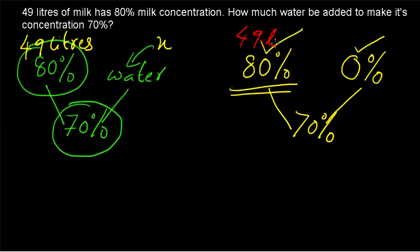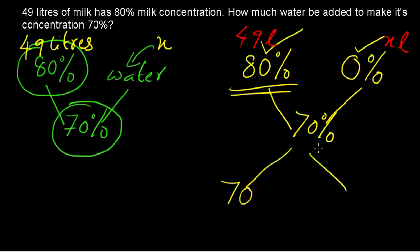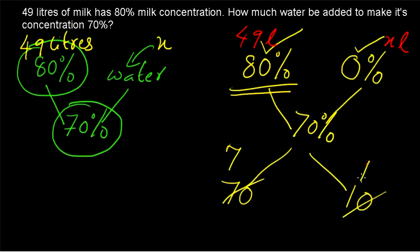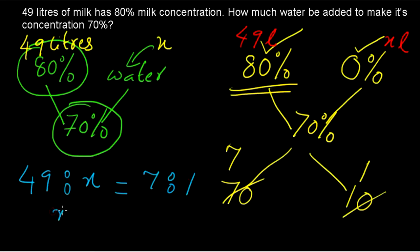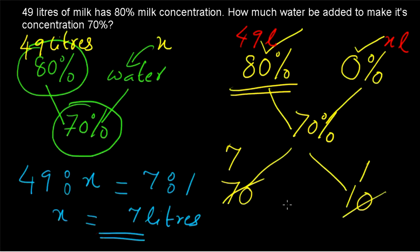We have 49 liters of the 80% solution and x liters of water. By the rule of allegation, the difference between 70 and 0 is 70, and the difference between 70 and 80 is 10, giving a proportion of 70:10, which simplifies to 7:1. So 49:x = 7:1, therefore x = 7 liters. Seven liters of water must be added to convert the 80% milk solution to a 70% milk solution.